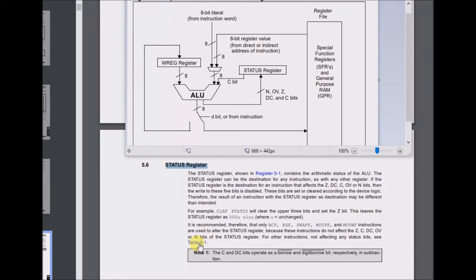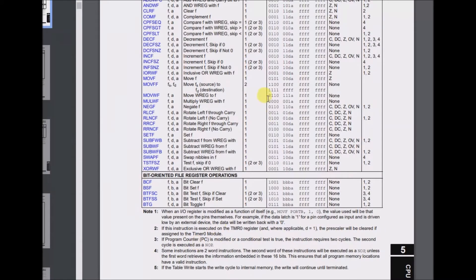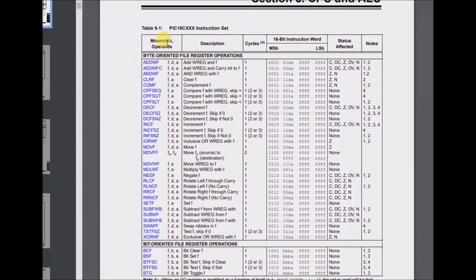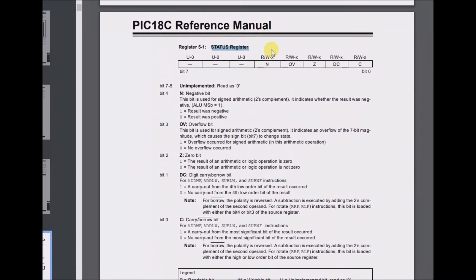Table 5-1 shows all of the mnemonic operands in assembly language, and in this section it shows the status bits affected in this column.